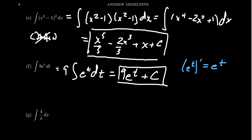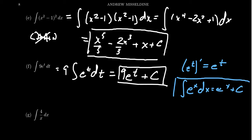Every derivative rule that we know can be translated into an antiderivative rule. The derivative of eᵗ is eᵗ — this is the same as saying the integral of eˣ dx equals eˣ + C. This one is worth saving for a future date.